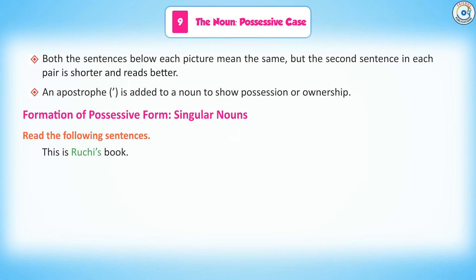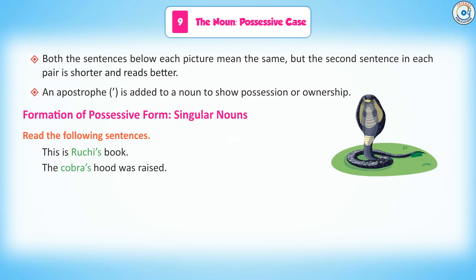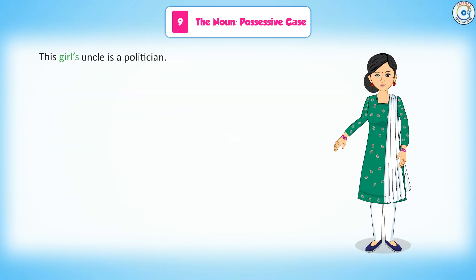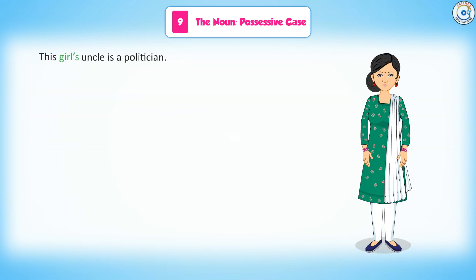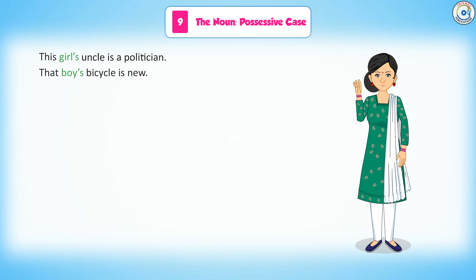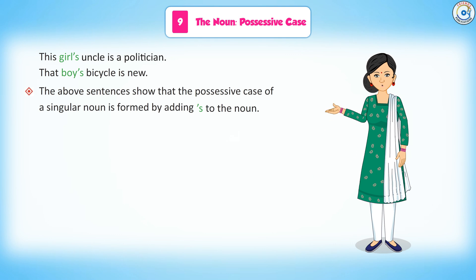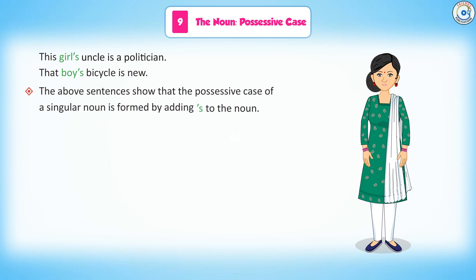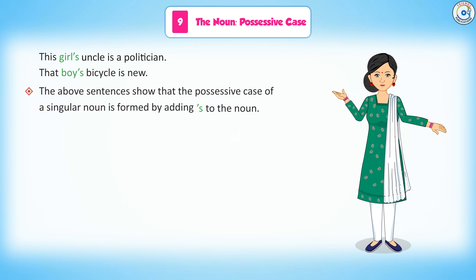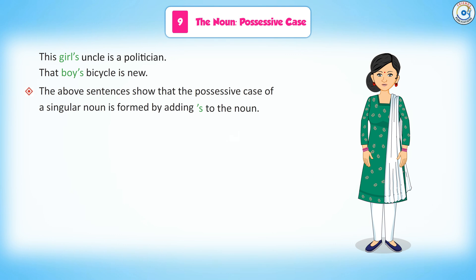This is Ruchi's book. The cobra's hood was raised. The girl's uncle is a politician. That boy's bicycle is new. The above sentences show that the possessive case of a singular noun is formed by adding 's to the noun.